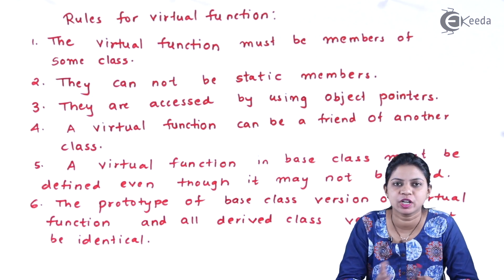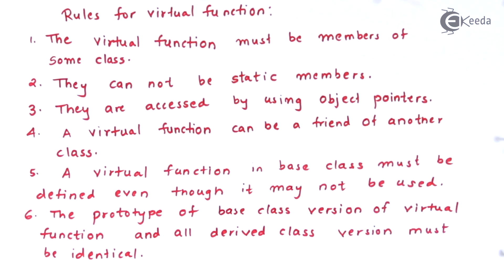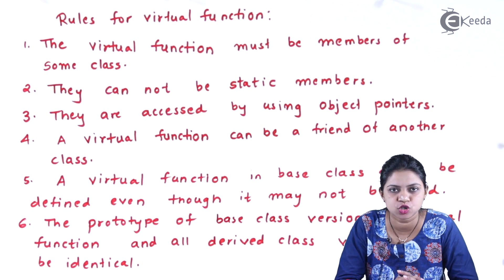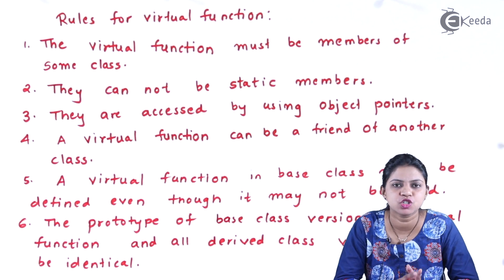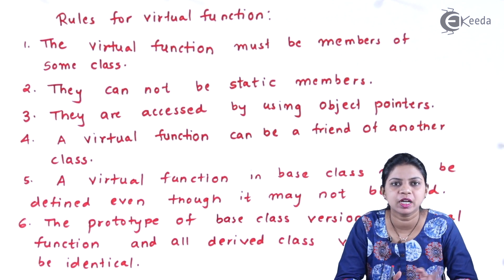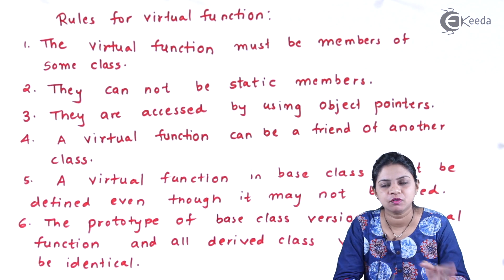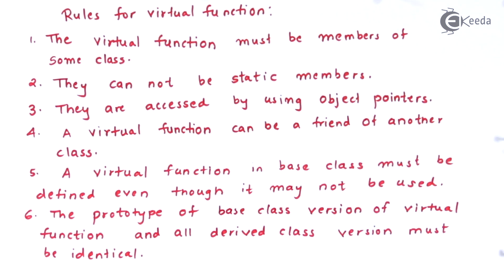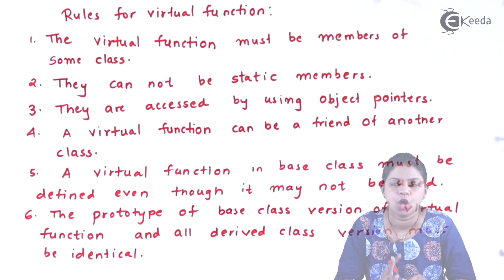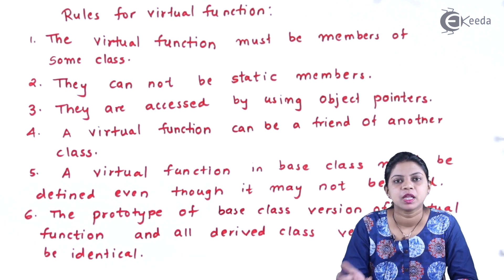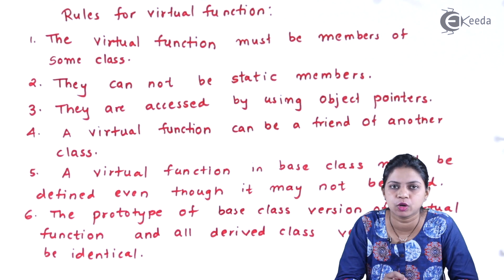Rule 5: a virtual function in the base class must be defined even if it is not used. In the previous example, even though display and show may not be directly used, you must make them virtual to get the derived class output. Rule 6: the prototype of the base class version and the derived class version must be the same — if the prototype is different, it would fall under function overloading, not runtime polymorphism.